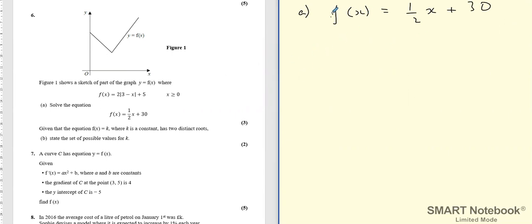So if we think about f(x) is 2 modulus of 3 minus x plus 5, so really our starting point here is to start off by sketching y equals 3 minus x. Now 3 minus x is a straight line with a y-intercept of 3, so negative gradient as downward sloping. When y equals 0, x equals 3.